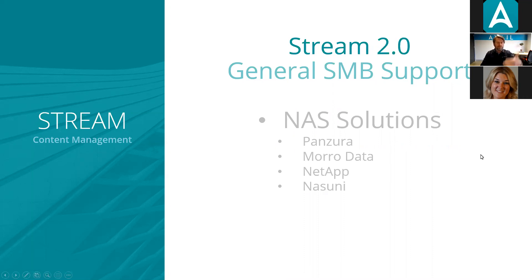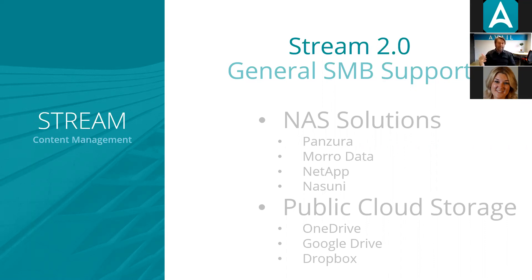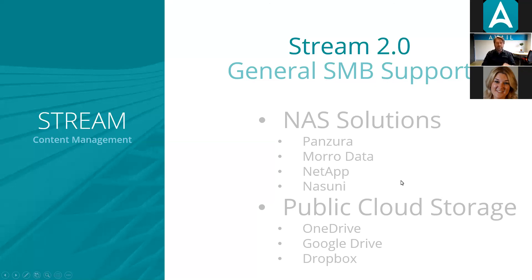Stream now supports that kind of information if that's what you've chosen to use. Also supported are public cloud storage solutions — things like OneDrive, Google Drive, and Dropbox. All of those tend to use this SMB protocol as well. Anytime you open Windows File Explorer and see a drive letter or click on OneDrive or Google Drive, those are all using SMB. Stream now supports any of that — if you can see it in Windows File Explorer, there's a very good chance Stream will work with that content.